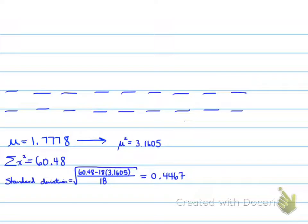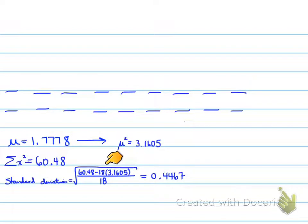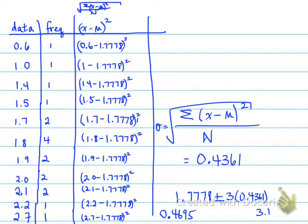Using the alternative formula to verify: we take the sum of all data values squared, which is 60.48, subtract 18 times the mean squared (18 × 3.1605), and divide by 18 — since this is the population, not a sample. This gives 0.4467, which is very close to our earlier result of 0.4361, confirming the two formulas produce similar results.